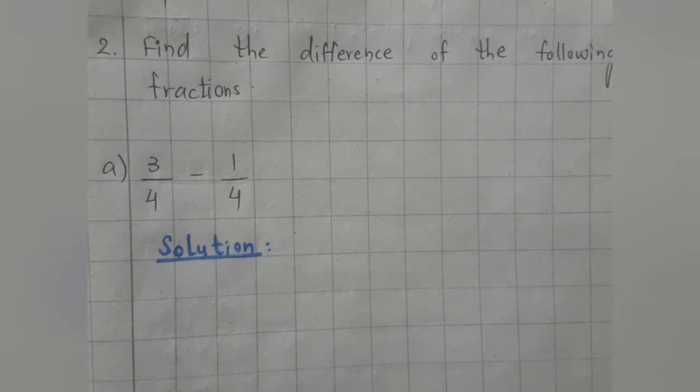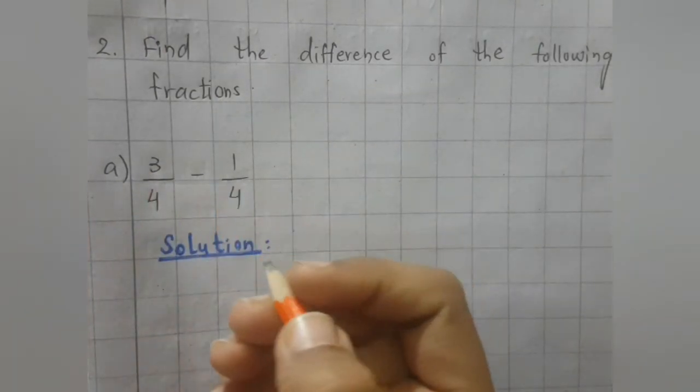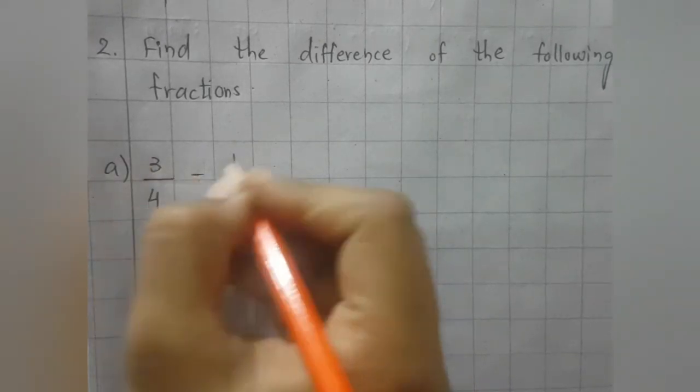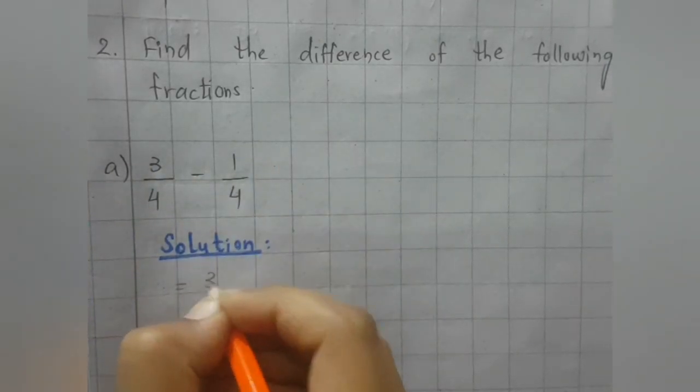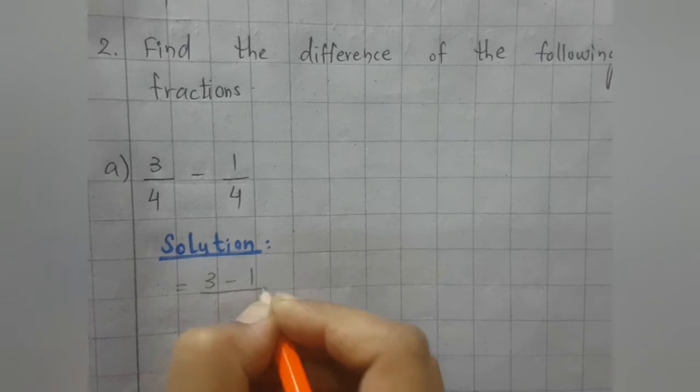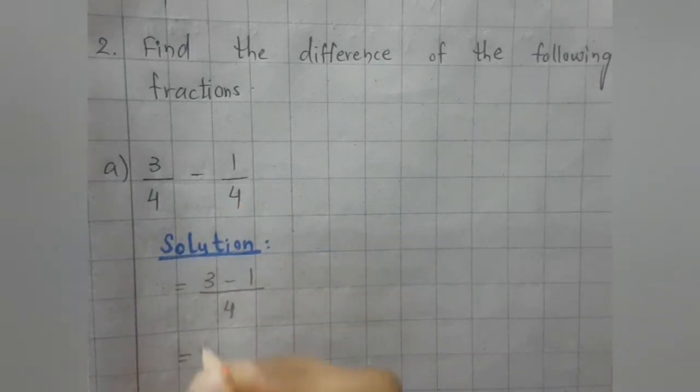We will subtract the like fractions in the same manner as we did in addition. We will simply subtract the numerators. First we will write 3 minus 1 and 4 as it is as common.